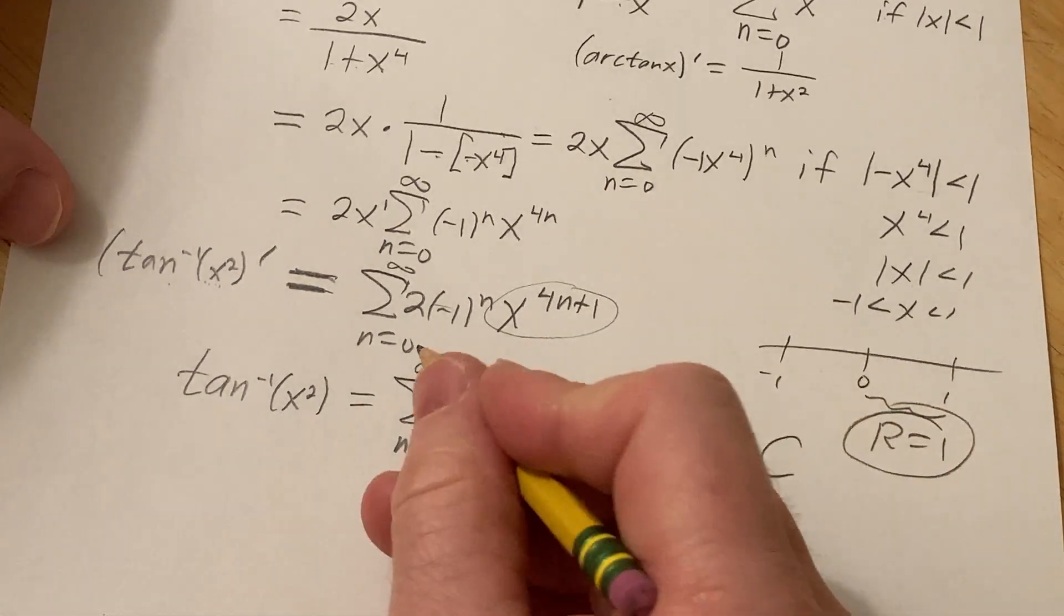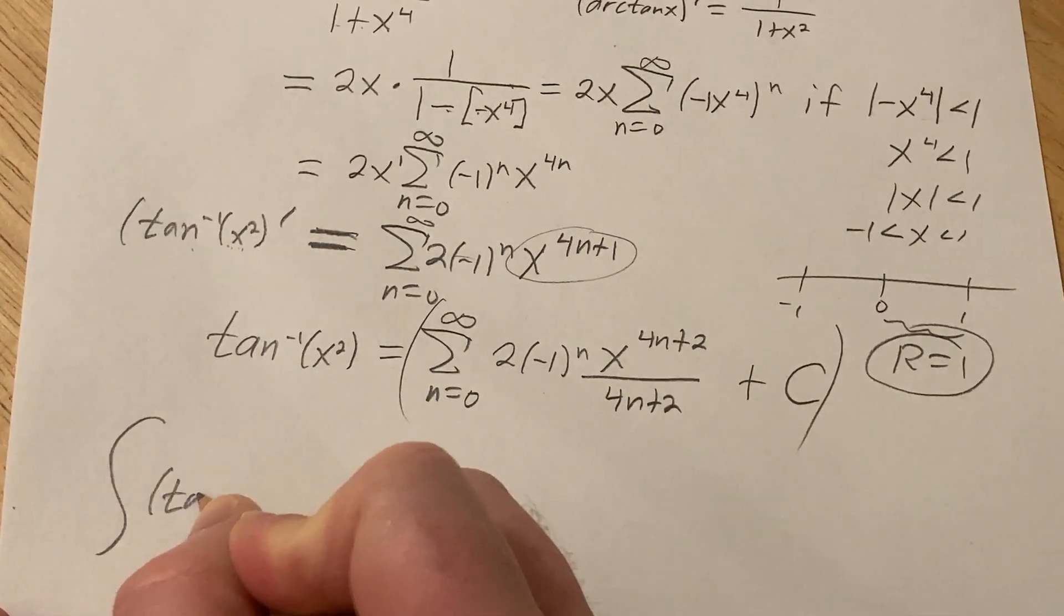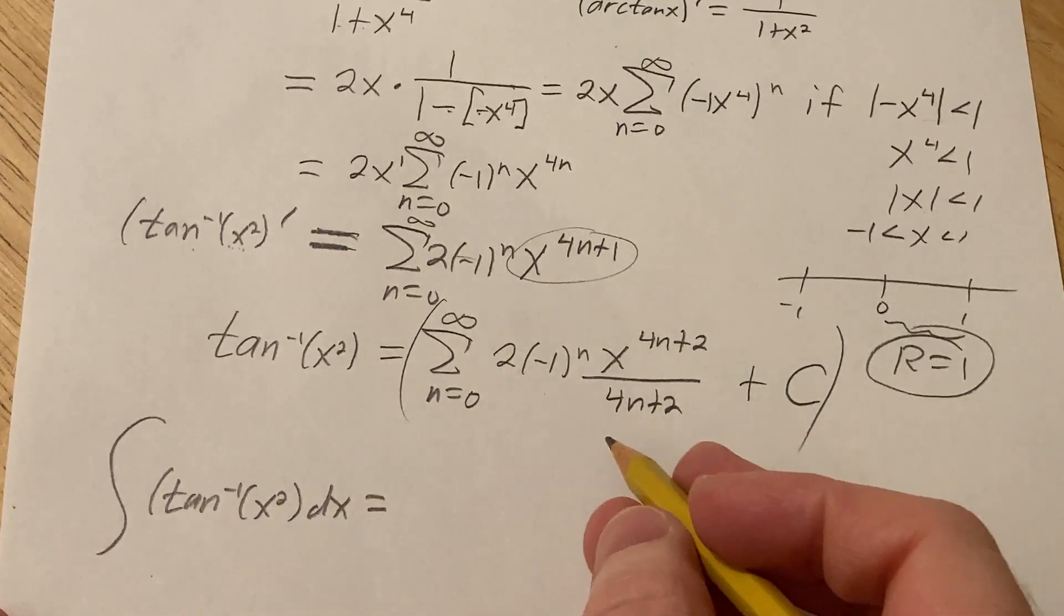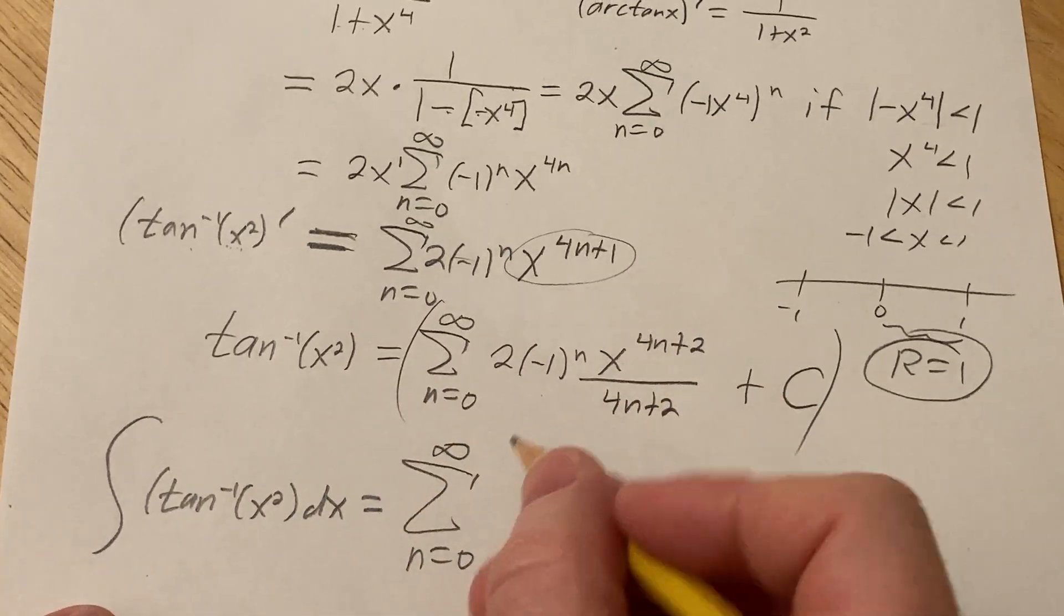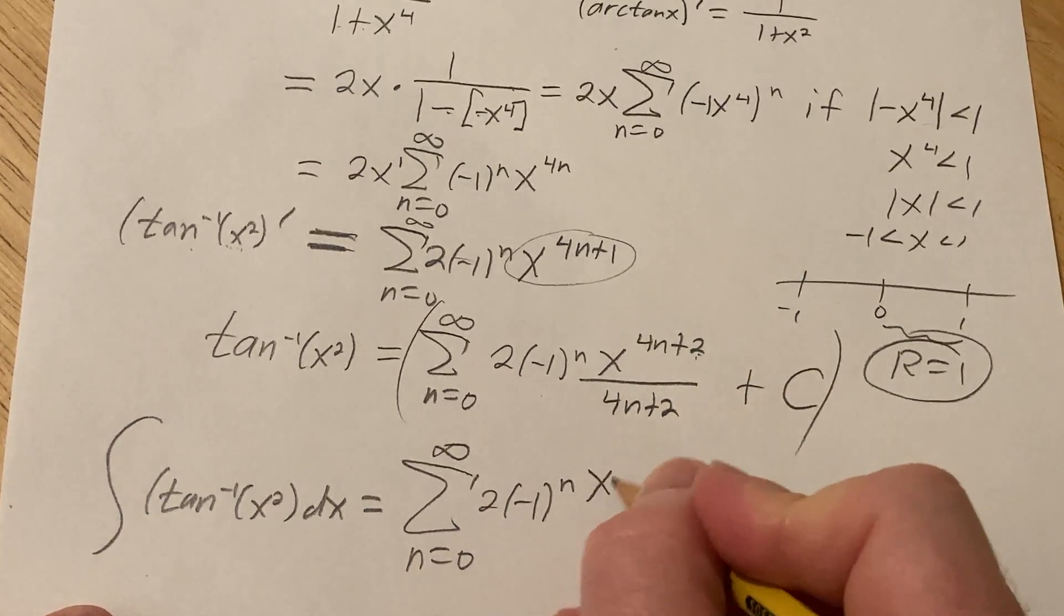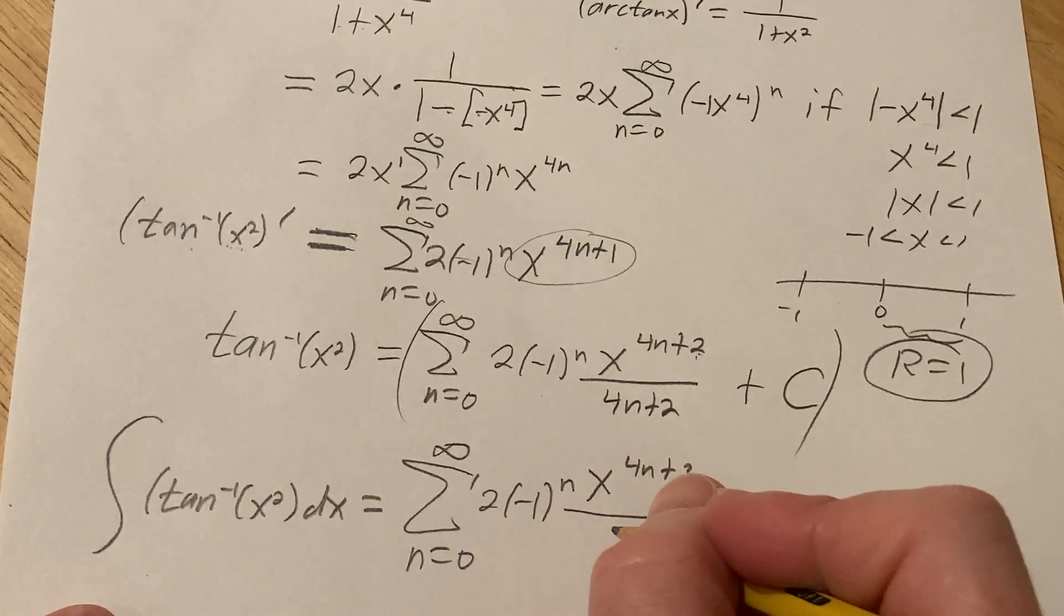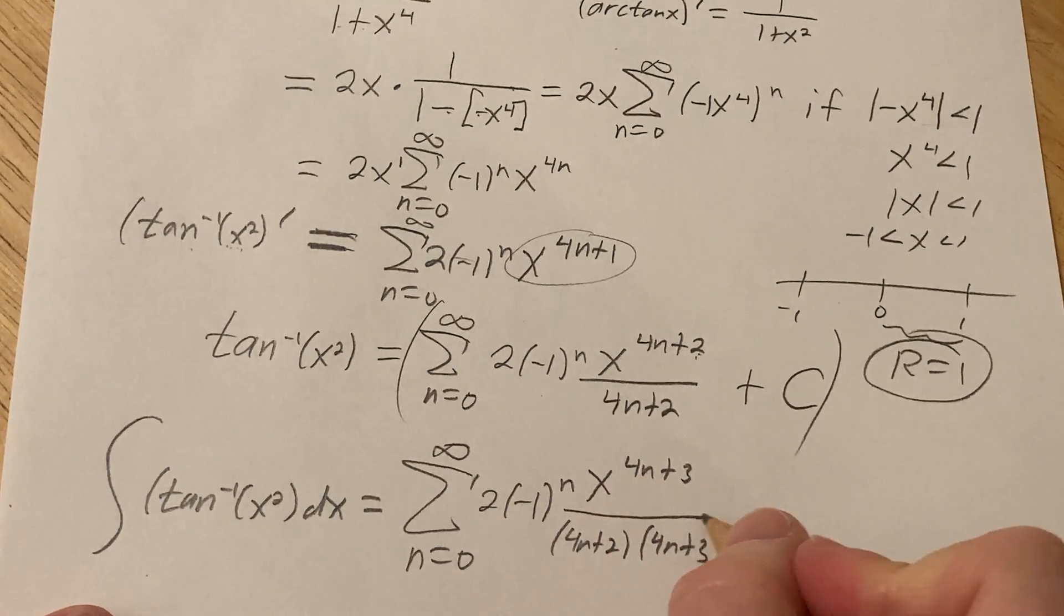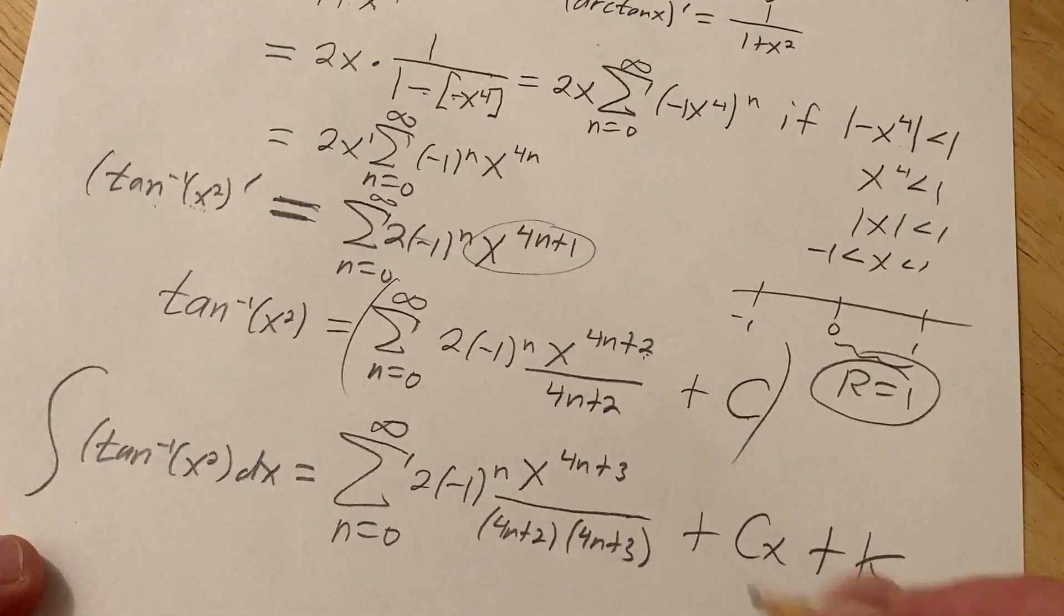And we also do get a constant of integration so I'm just going to add it here at the end, plus c. Okay, so now we have the integral tan inverse x squared dx, so now we integrate again. We have infinite sum n equals 0 to infinity, 2 times negative 1 to the n. Integrating again we're going to get x to the 4n plus 3 over, and the 4n plus 2 stays there and then we get another 4n plus 3 here. And then integrating c we get cx plus another constant which I'll call capital K.